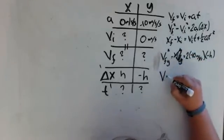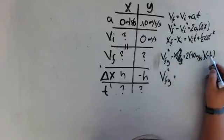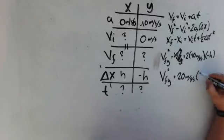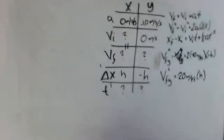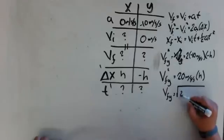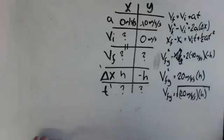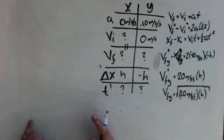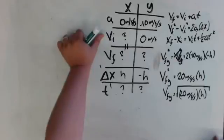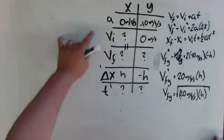The v_initial_y term is zero and drops off. So v_final_y squared equals 20 m/s² times h — the negatives cancel. That means v_final_y equals the square root of 20h. Over in the x direction, I don't know initial or final velocity, but I know they're equal to each other. I know the positional value h and I know the acceleration is zero.